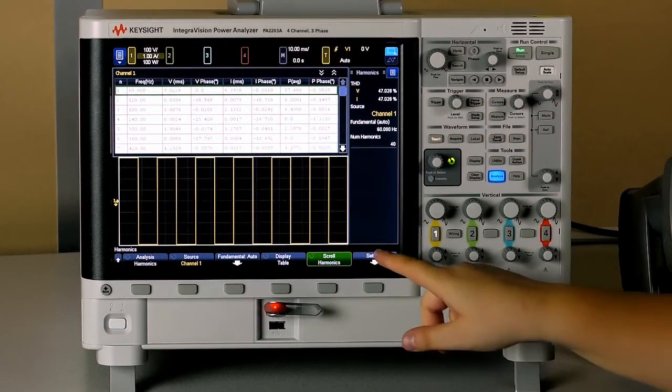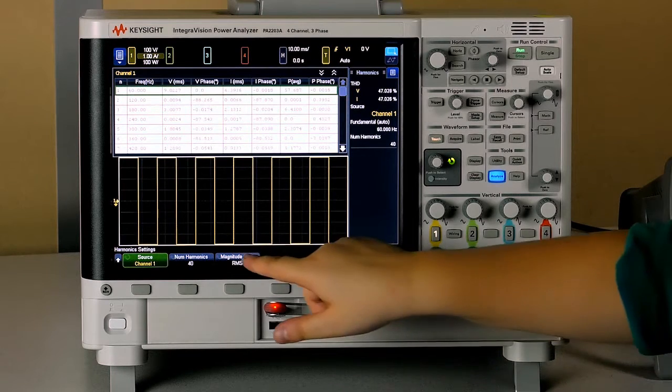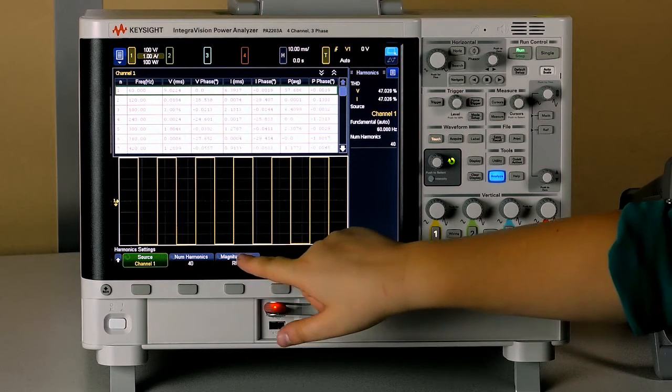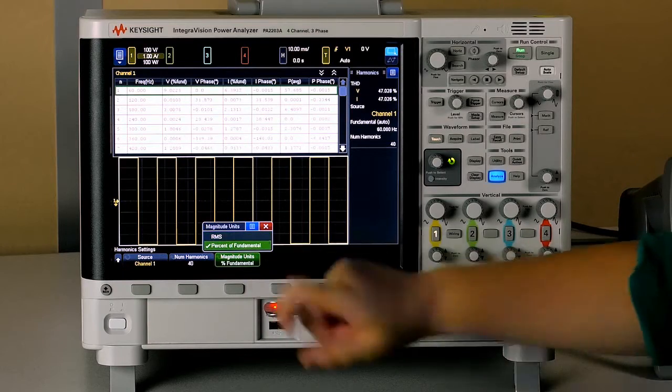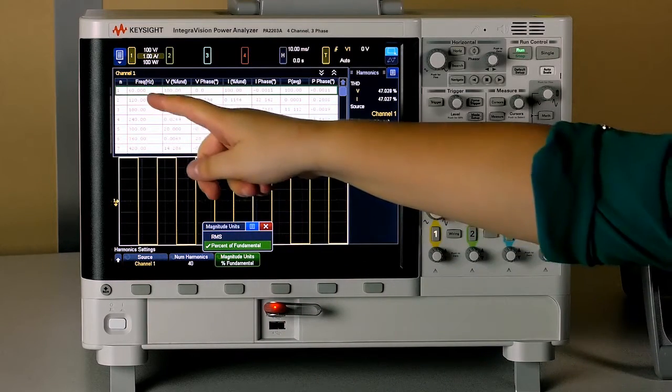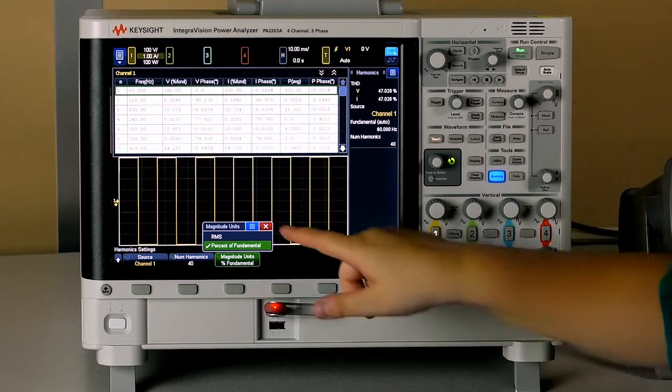If you want to view a different kind of magnitude, like percent fundamental, you can go to settings, magnitude units, choose percent of fundamental, and that will show up in the header which units you're looking at.